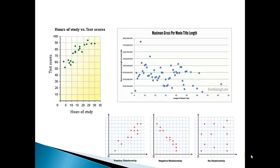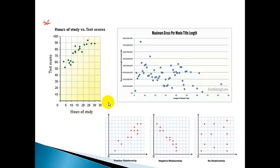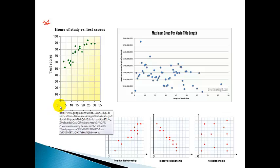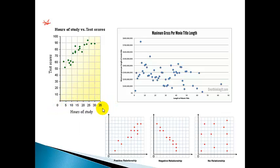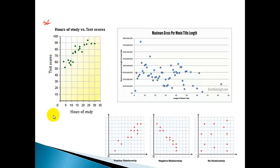It's another way that we can represent data. These particular graphs I got from the internet. This one right here you probably have seen or had discussions about, because as the time that you spend studying increases, notice that my x value is increasing. I'm plotting this in quadrant one of the coordinate grid. So as the x increases, my y values increase. That would be my test scores, and that makes sense - the more time you study, the better test scores you would have.